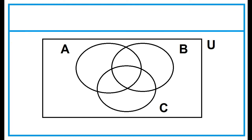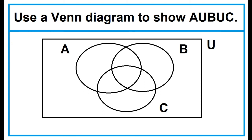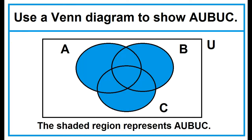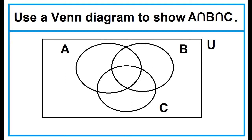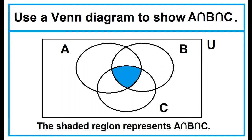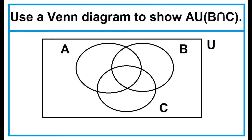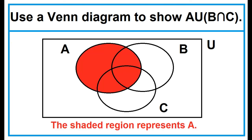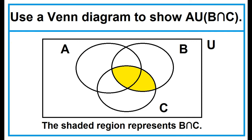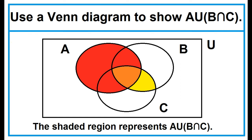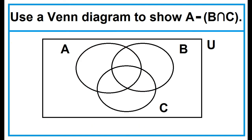This time let's try three overlapping circles to represent sets A, B, and C. Use a Venn diagram to show A union B union C — the shaded region represents A union B union C. Use a Venn diagram to show A intersection B intersection C — the shaded region represents A intersection B intersection C. Combining the intersections of B and C with A, we get the shaded region representing A and the quantity B intersection C.